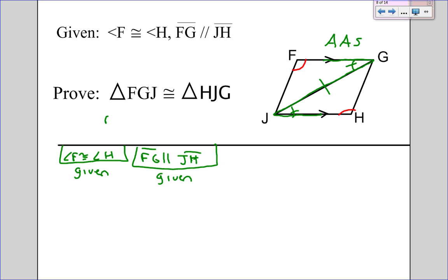And any time we have a reflexive or vertical angle, we put that on the top line. So in this case, I have a reflexive side. So I say JG is congruent to JG, and that's because it is reflexive. So now how many congruent statements do I have? Well, I have one, two, so I need a third one, which will come from here.